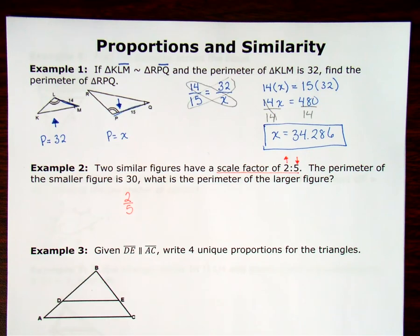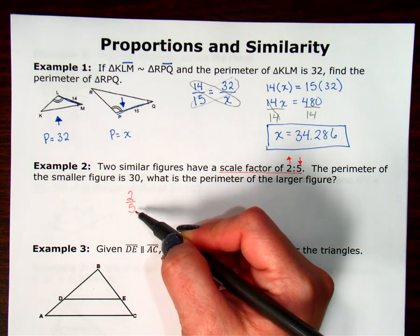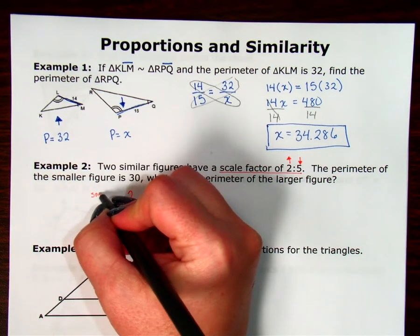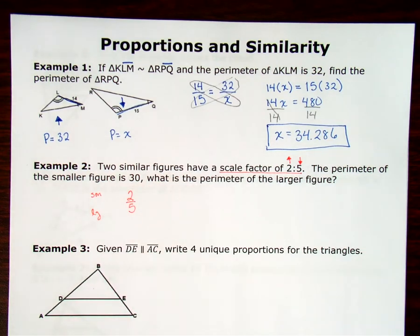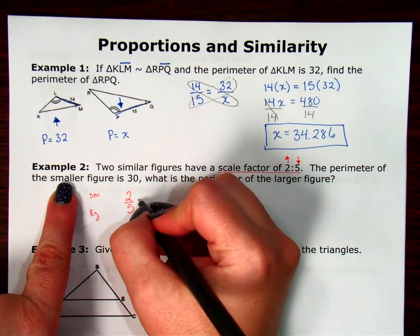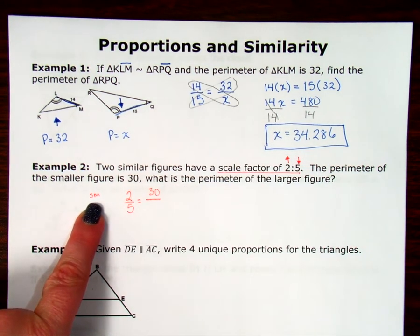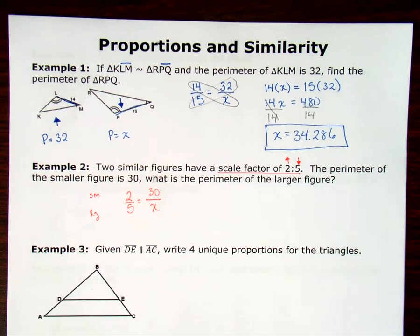Now, they didn't tell me which is on the top and which is on the bottom. The common sense says if my smaller number is on the top, then my smaller figure must have been in the numerator and my larger figure must have been in the denominator. So the perimeter of the smaller figure, that means that's going to go on top, is 30. What's the perimeter of the larger one? That's where my X is going to go.